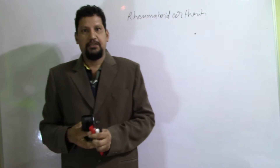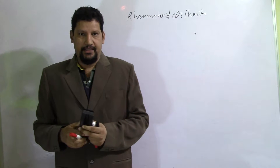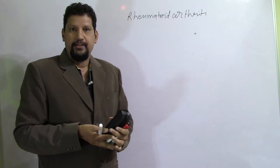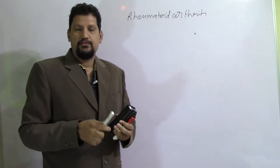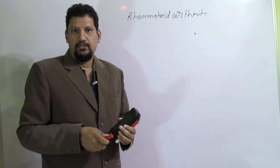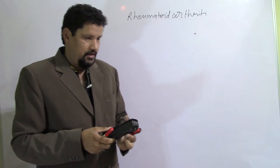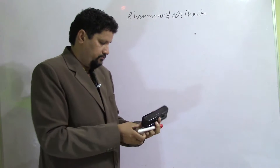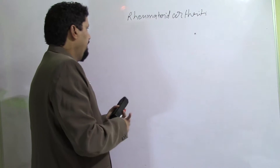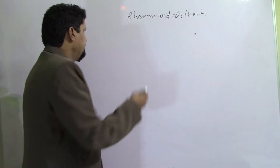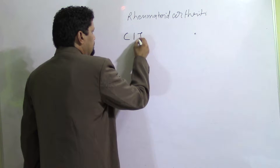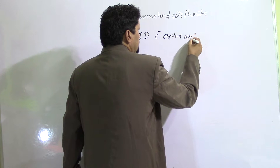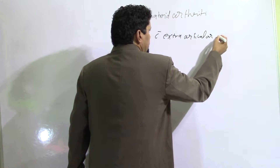Good morning and welcome to this lecture on rheumatoid arthritis. Rheumatoid arthritis is a chronic inflammatory joint disease primarily, but it also involves extra-articular organs like skin, heart, lungs, pleura, and kidneys. In its simplest form, it is a chronic inflammatory joint disease with extra-articular involvement.